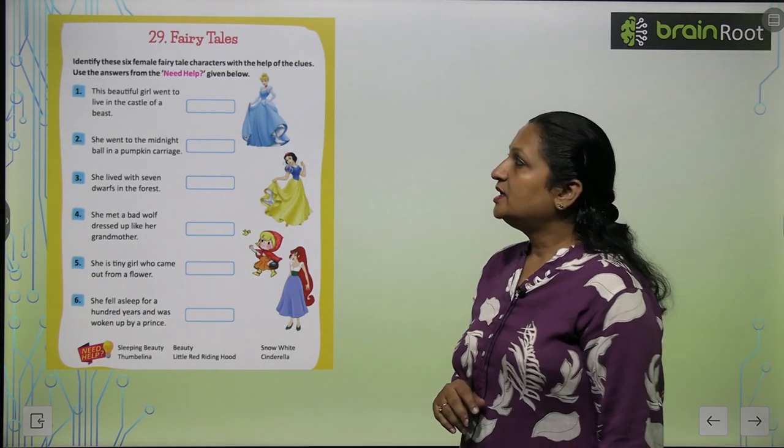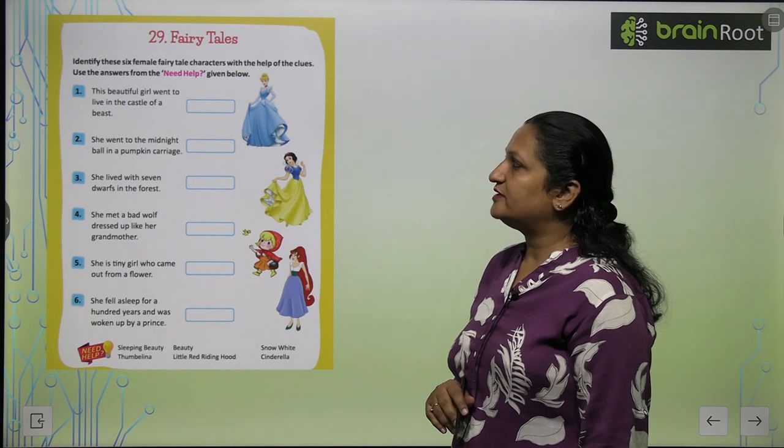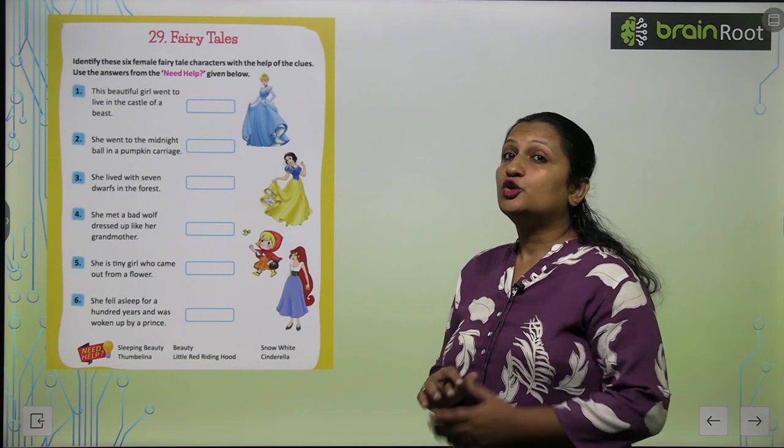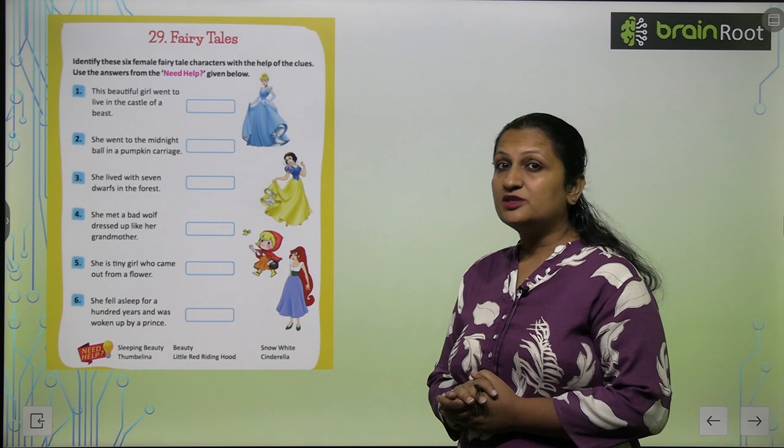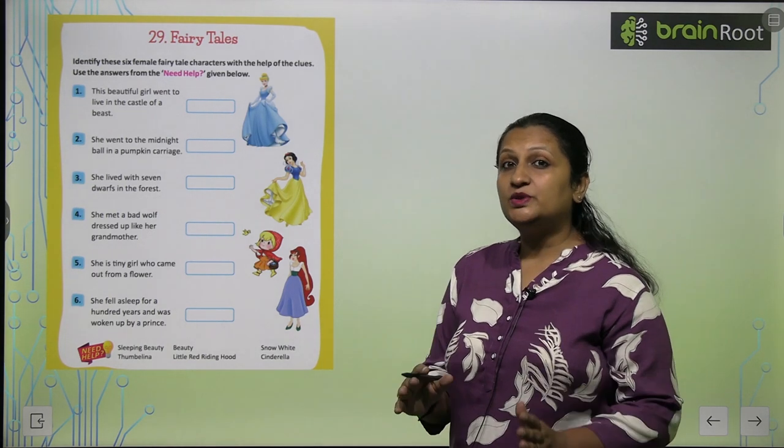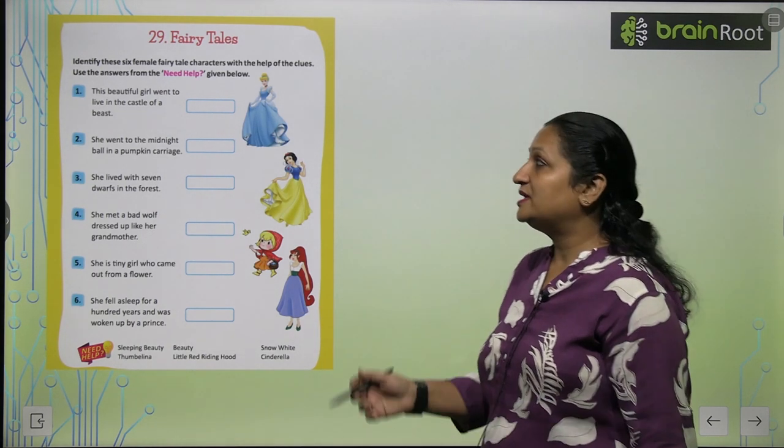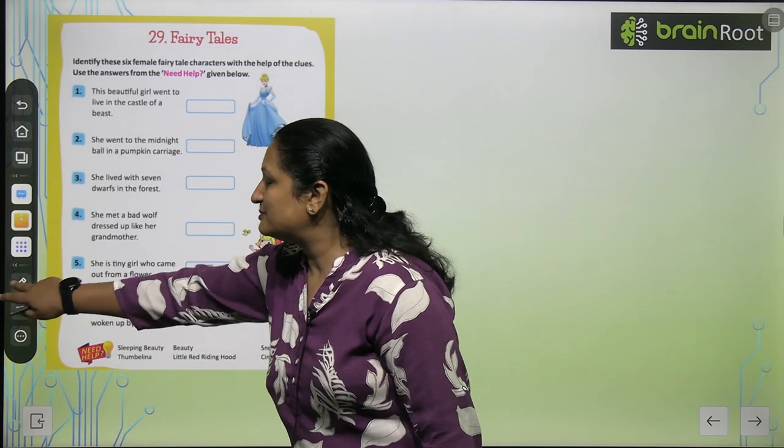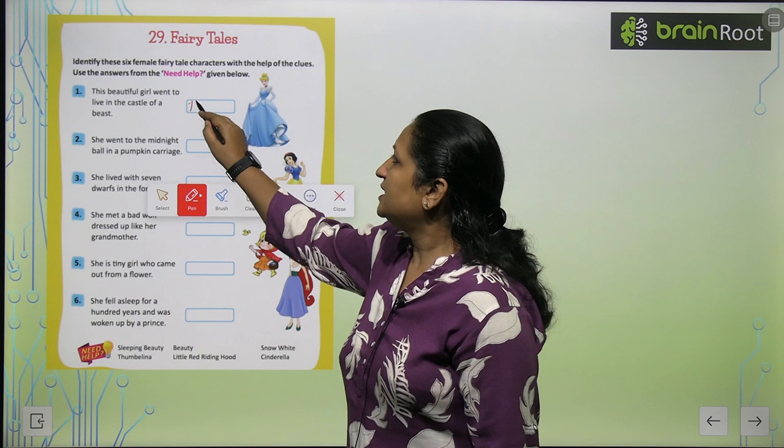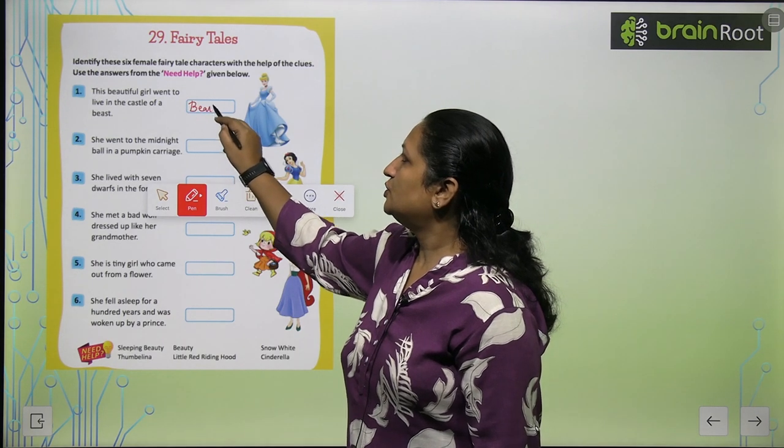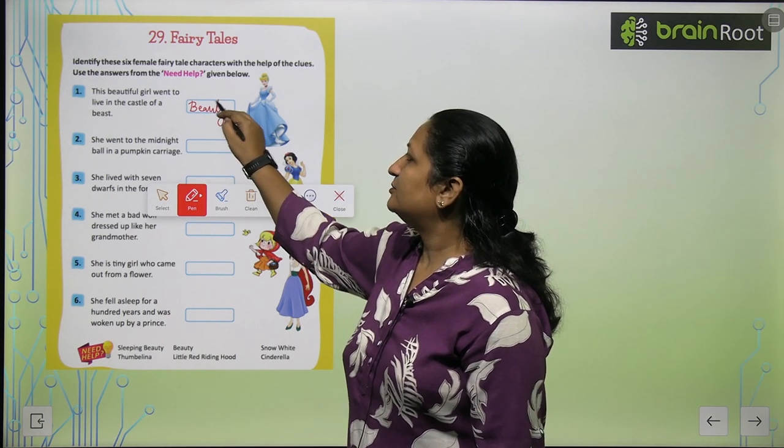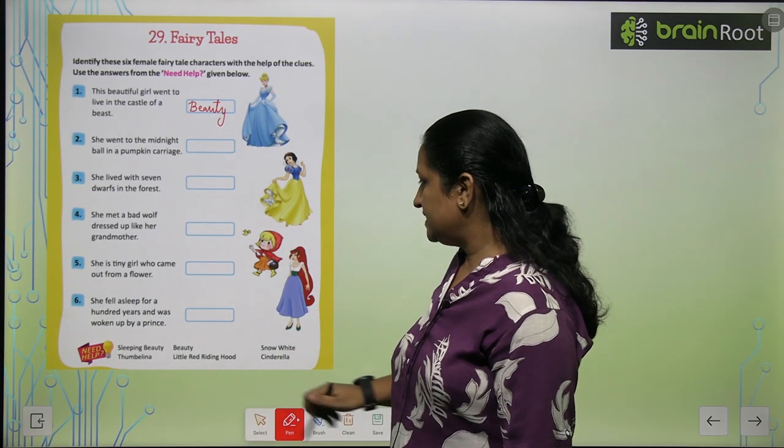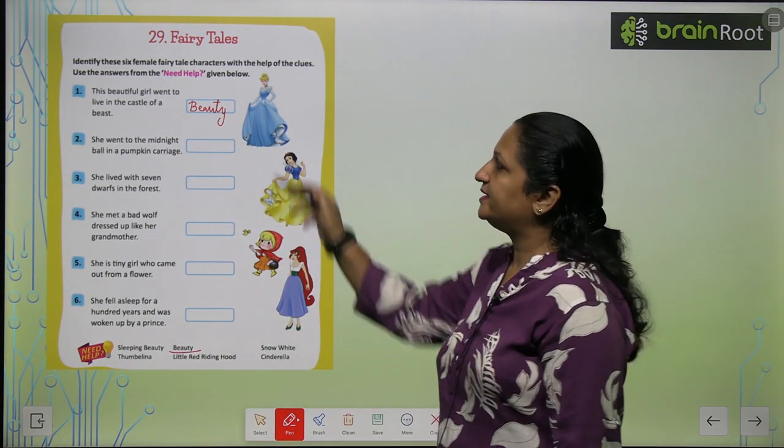See the first one. This beautiful girl went to live in a castle of the beast. Who was she? This famous story is Beauty and the Beast. She lived with the beast. You can see the spelling here: B-E-A-U-T-Y, Beauty. Here is the spelling, you can see it easily.